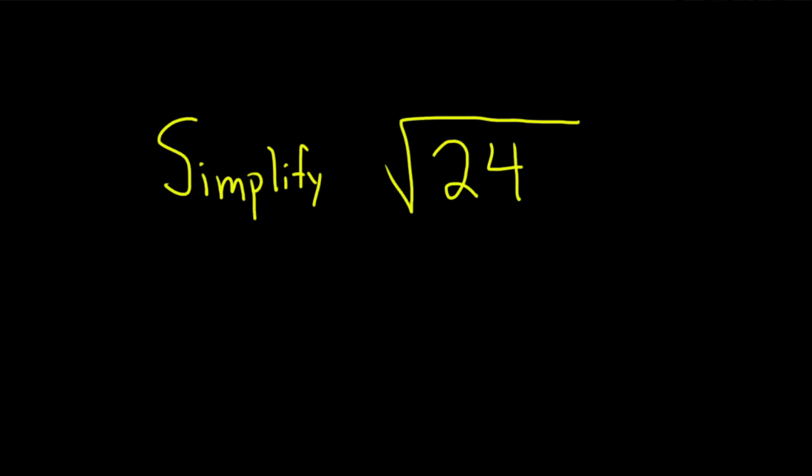Hi, in this problem we're going to simplify the square root of 24. Let's go ahead and go through this carefully. So to simplify something like this, one way to do it is to write it as a product of primes.